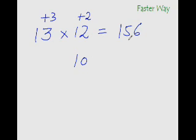Now, to get the first two digits of your answer, all you need to do is add these numbers in a cross manner. So, 3 plus 12 is 15 or 13 plus 2 is 15. Either ways, you will get the same answer. So, you are not likely to go wrong here.